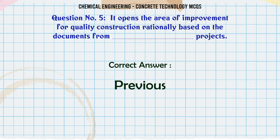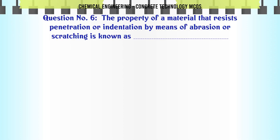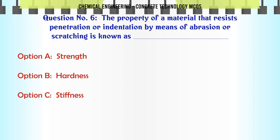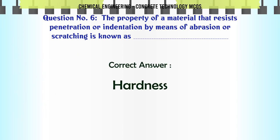The property of a material that resists penetration or indentation by means of abrasion or scratching is known as: A. strength. B. hardness. C. stiffness. D. toughness. The correct answer is hardness.